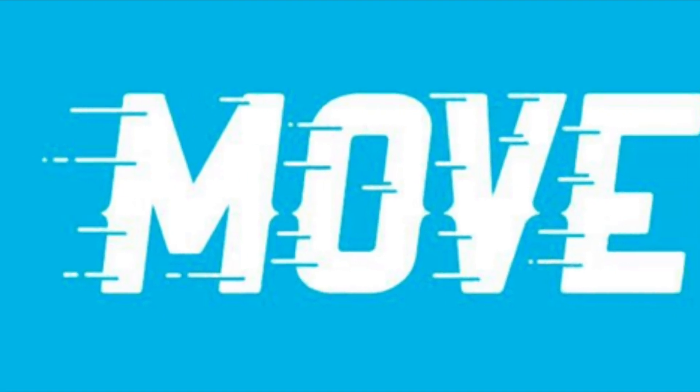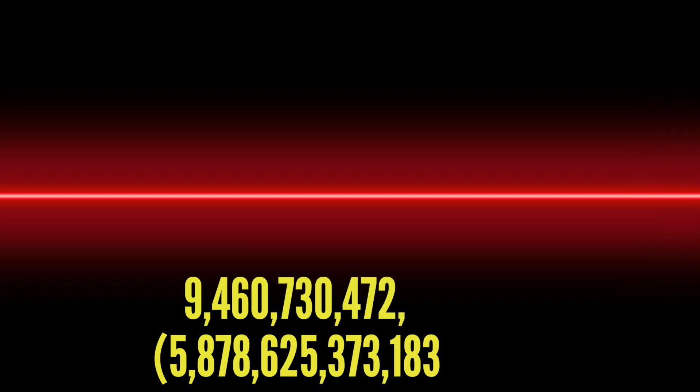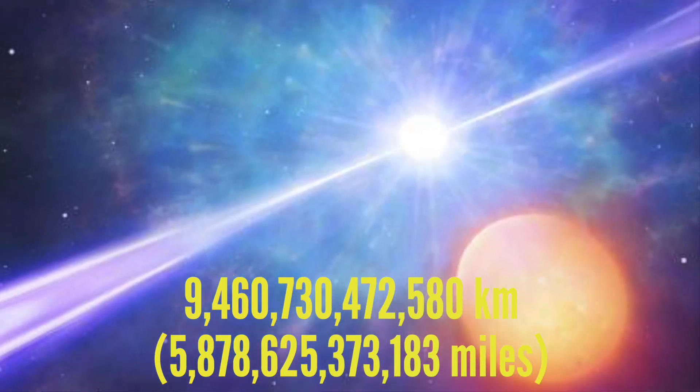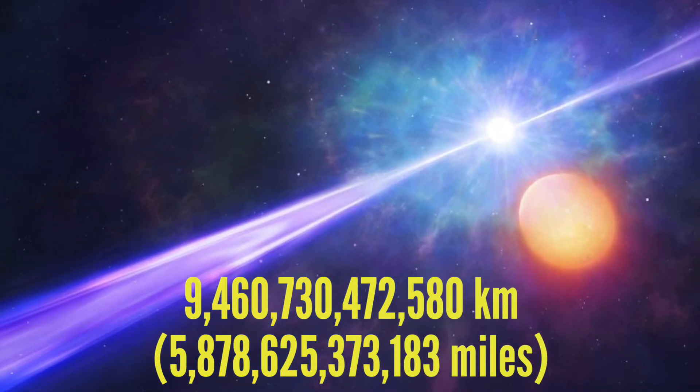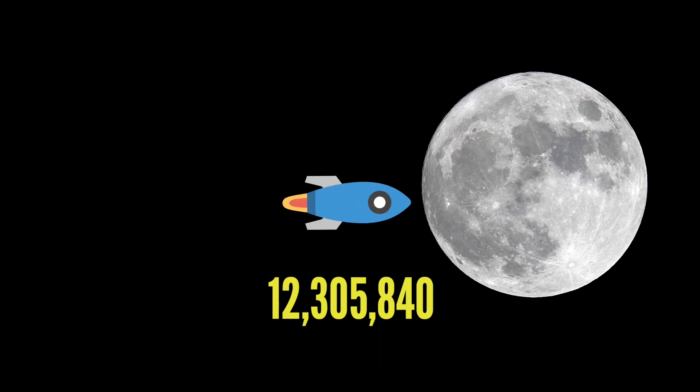Let's move to the big one, a light year. A light year is 9,460,730,472,580 km. My head hurts from just looking at the number. This is a truly astronomical number of kilometers away. It's like going to the moon and back an amazing 12,305,840 times.